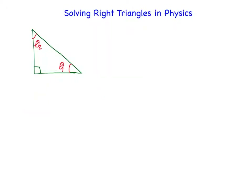The next thing we need to do is identify the sides. This one is the hypotenuse — it's the longest side of a right triangle. And then we have these other two sides, which we can call A and B for right now.